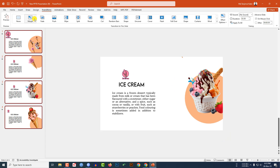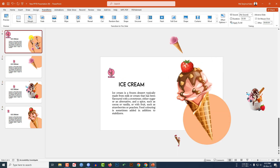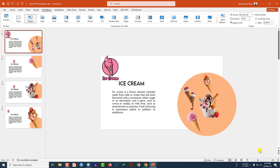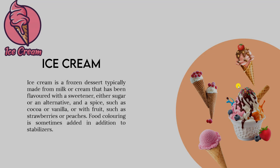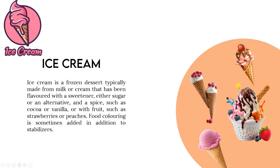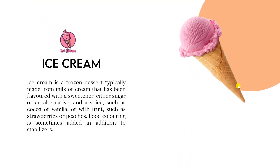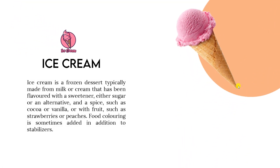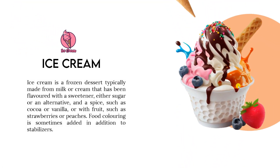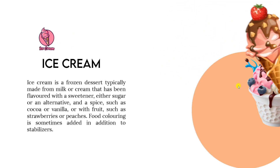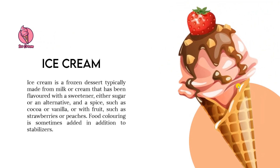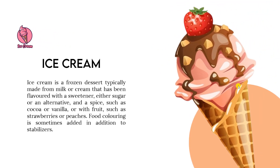Select all four slides, go to Transitions, and click on Morph. Now go to the first slide and watch the slideshow. This is looking beautiful — each slide transition looks perfect.